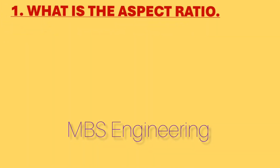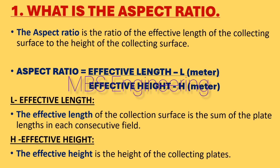The particulate is then attracted to the grounded collector plate and forms a dust layer on the plate. Next, we are going to understand what the aspect ratio is in the ESP. The aspect ratio is the ratio of the effective length of the collecting surface to the height of the collecting surface. The aspect ratio equals effective length in meters divided by effective height in meters.